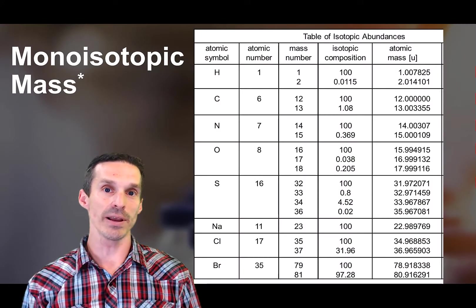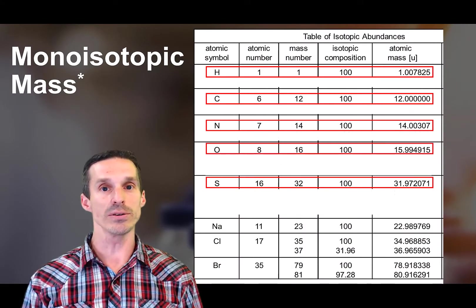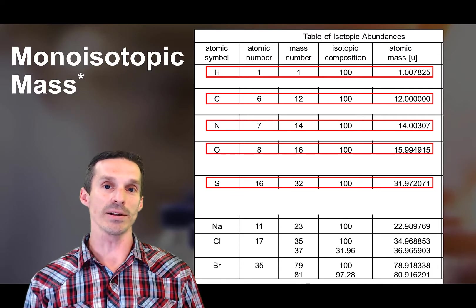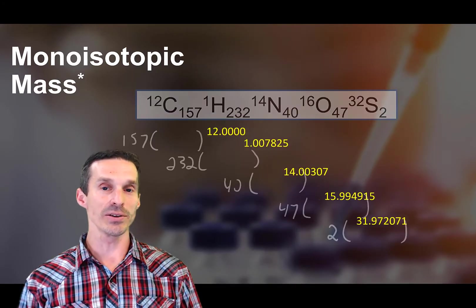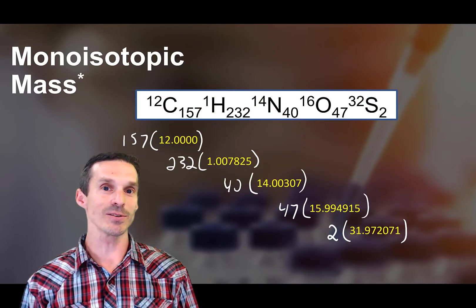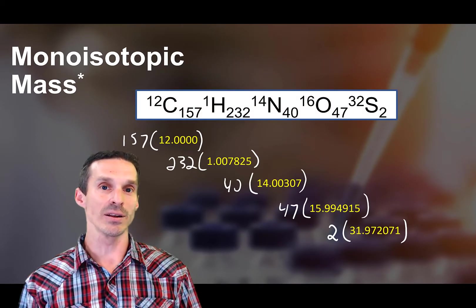So we can go back to the table now and I'll just highlight for you all of the masses that you should be using to calculate the monoisotopic mass of bovine insulin. And again, it's pretty obvious what you're going to do is simply multiply each of these masses by the number of atoms of each case and then add them all together.